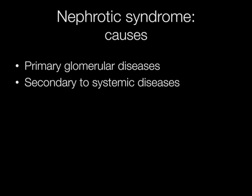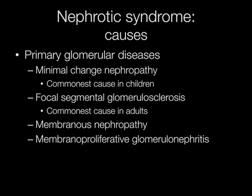The causes of nephrotic syndrome may be subdivided into primary glomerular diseases and secondary to systemic diseases. Primary glomerular diseases include minimal change nephropathy, which is the commonest cause in children; focal segmental glomerulosclerosis, or FSGS, the commonest cause in adults; membranous nephropathy, another common cause in adults; and membranoproliferative glomerulonephritis.